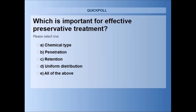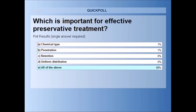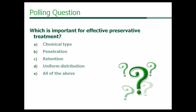And here is our last poll question: which is important for effective preservative treatment? You can select chemical type, penetration, retention, uniform distribution, or all of the above. Looks like everybody nailed that one. All of those issues — chemical type, penetration, retention, uniform distribution — are all important for preservative treatments.